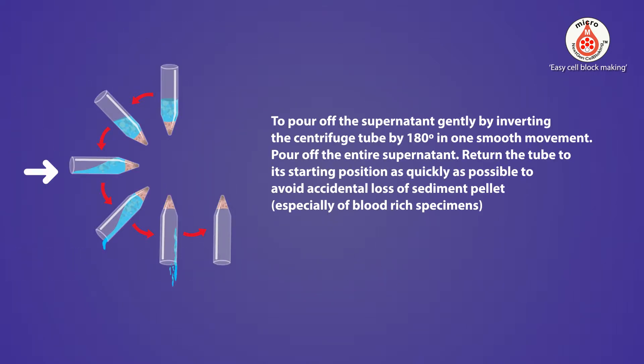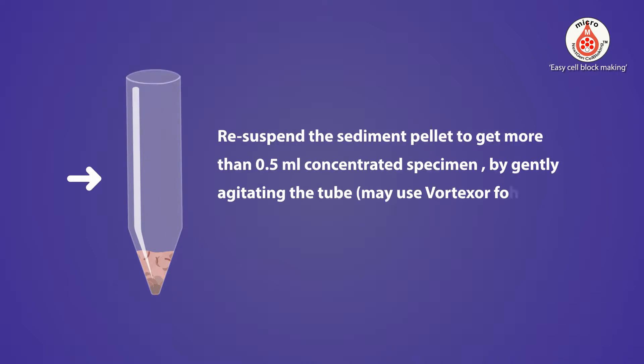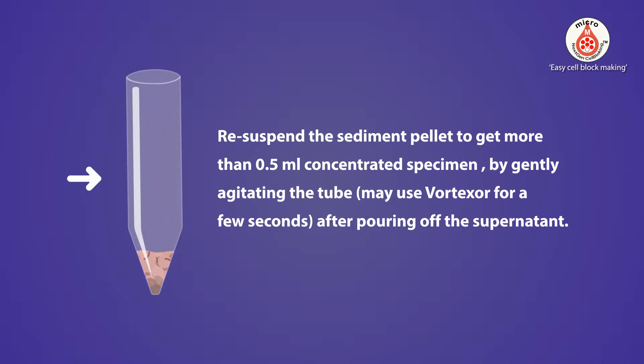To pour off the supernatant, gently invert the centrifuge tube by 180 degrees in one smooth movement. Pour off the entire supernatant. Return the tube to its starting position as quickly as possible to avoid accidental loss of the sediment pellet, especially with blood-rich specimens. Re-suspend the sediment in minimal supernatant to get more than 0.5 ml of final concentrated specimen.